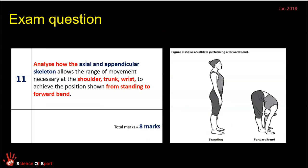Let's focus in on one exam question and the process you might go through when interpreting the question. Knowing it's Question 11 means you know you're going to be talking about the skeletal system only. Knowing it's Question 11 also means you know it's 8 marks, so 8 marks are available for this answer. You need to develop a sufficient answer to gain potentially 8 marks — if it's a very short or brief answer, you'll miss marks. Then we go to the text and the content of the question itself.